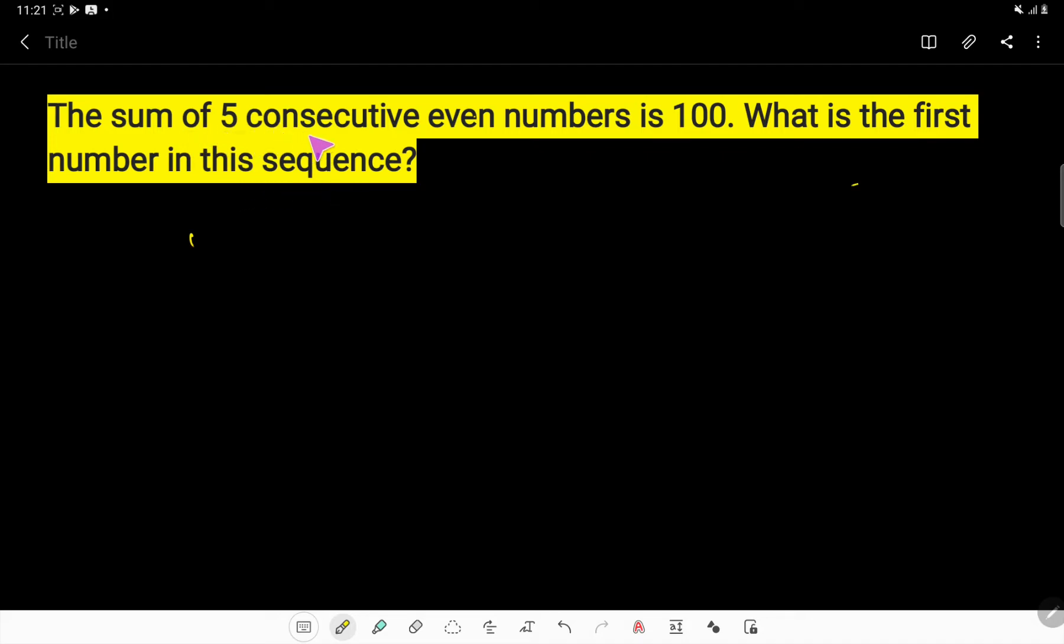The sum of 5 consecutive... What do you mean by consecutive? Look. 1, 2, 3, 4, 5, 6. After 1, we expect 2. After 2, we expect 3. That is, consecutive means follow one after another. Right? So these are the consecutive numbers.